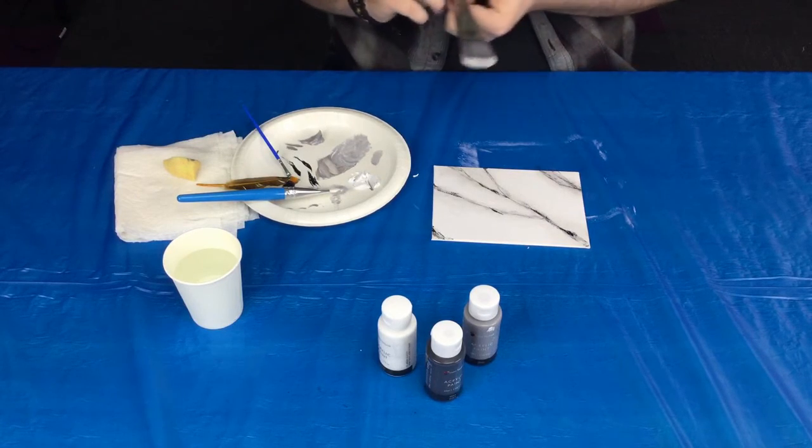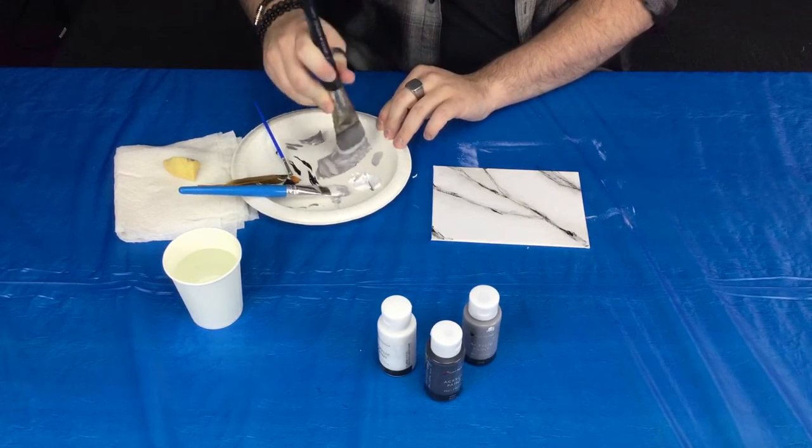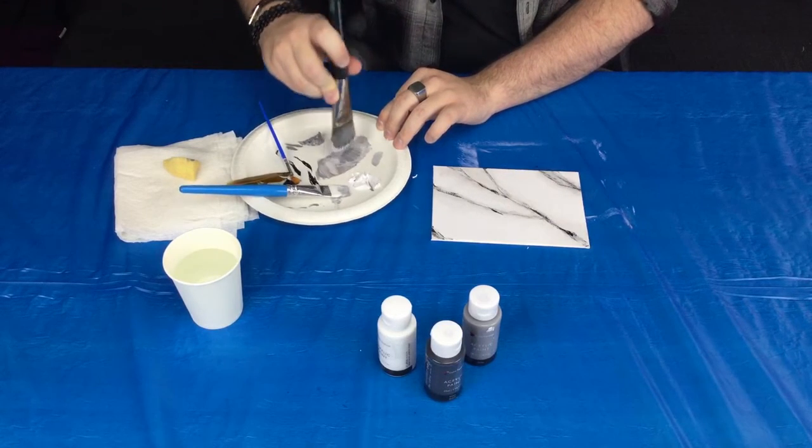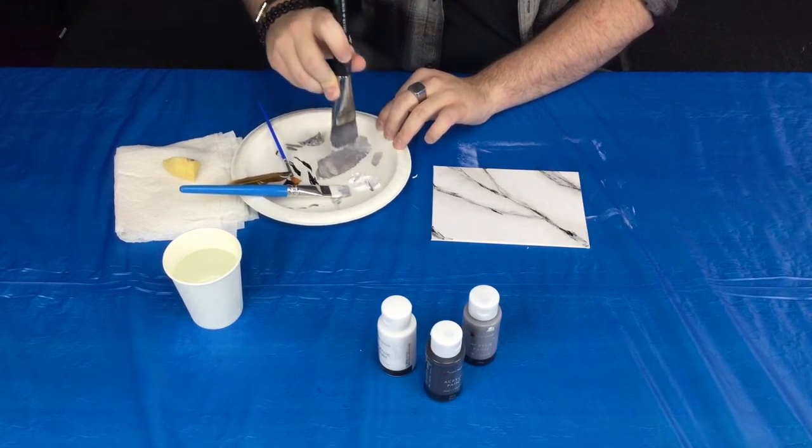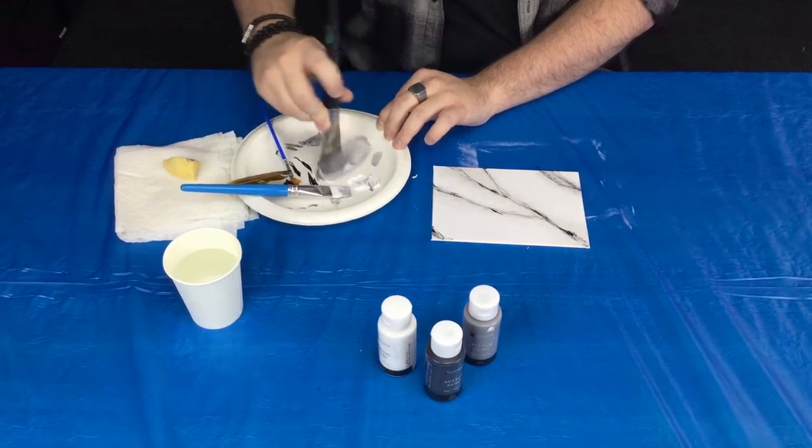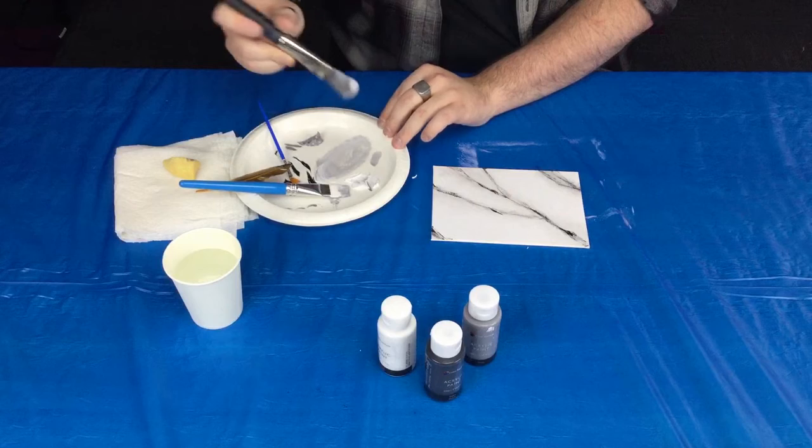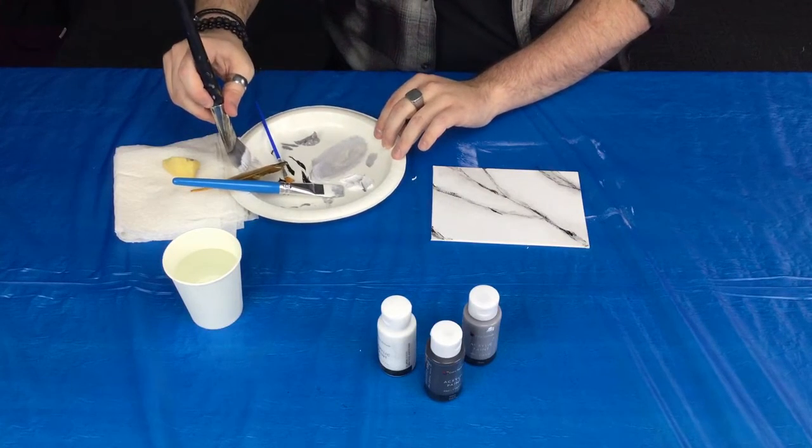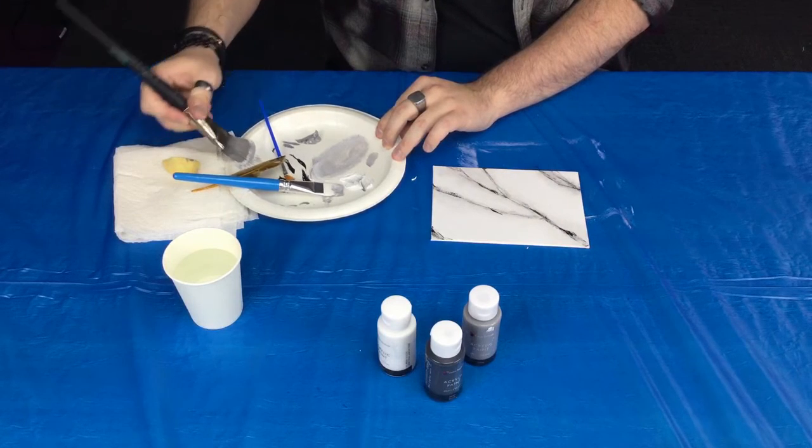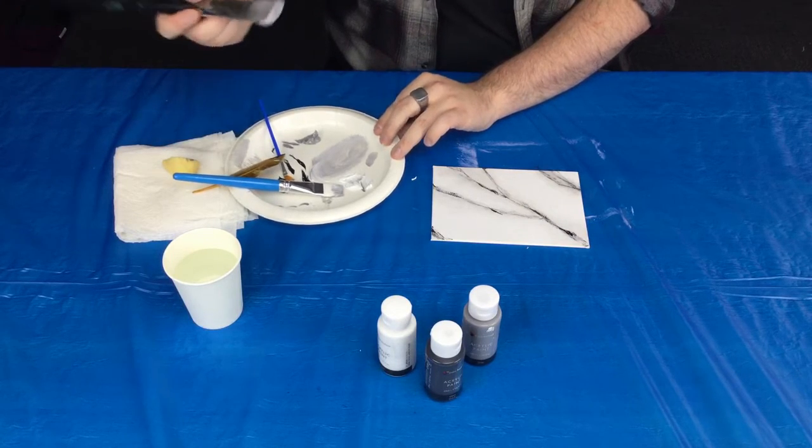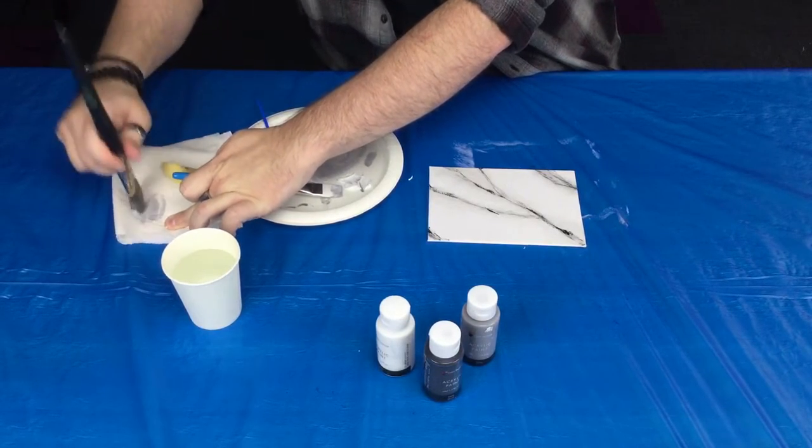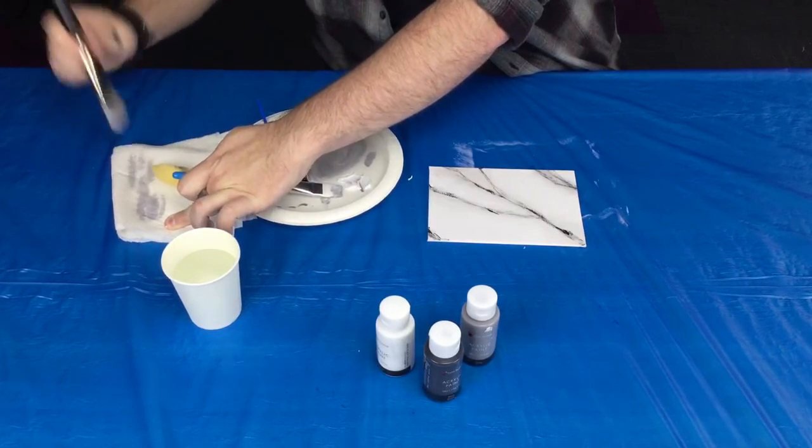You're going to get some of the gray and get it nice and mixed in there. And then you're going to want to get all of your excess out, because what you're going to do next is you're just going to dampen down this entire thing so that it doesn't look so bold. Now, if you want a really bold marble, then you can keep it just like it is. But it's just a little bit too much for me. So I'm going to actually dull it down just a little bit with this gray.